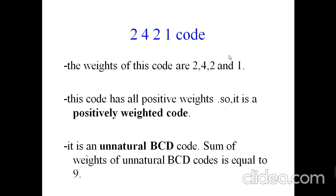The 2421 code is called an unnatural BCD code because the sum of its weights equals only nine. In 8421 code, the weights sum to fifteen: eight plus four is twelve, twelve plus two is fourteen, fourteen plus one is fifteen. But in 2421 code, two plus two is four, four plus two is six, six plus one is seven — wait, the weights sum to nine only. That's why it is called an unnatural BCD code.